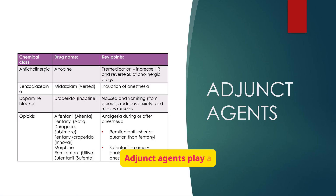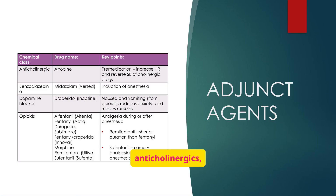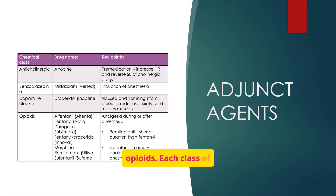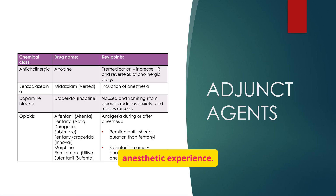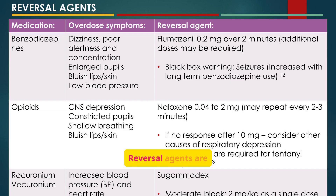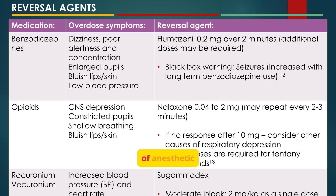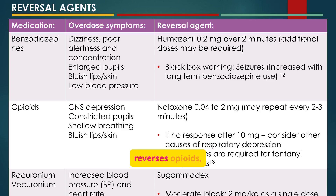Adjunct agents play a crucial role in anesthesia, including anticholinergics, benzodiazepines, dopamine blockers, and opioids — each serving a specific purpose in optimizing the anesthetic experience. Reversal agents are essential for managing overdoses or adverse effects: flumazenil reverses benzodiazepines, naloxone reverses opioids, and sugammadex reverses rocuronium and vecuronium.